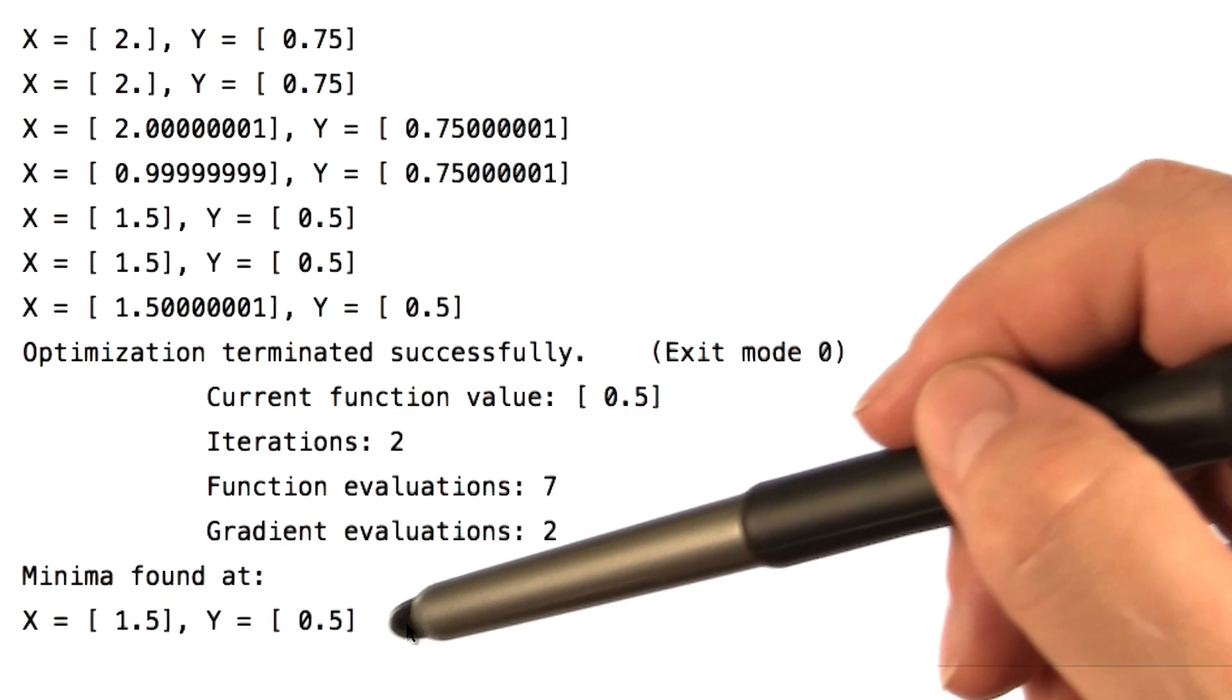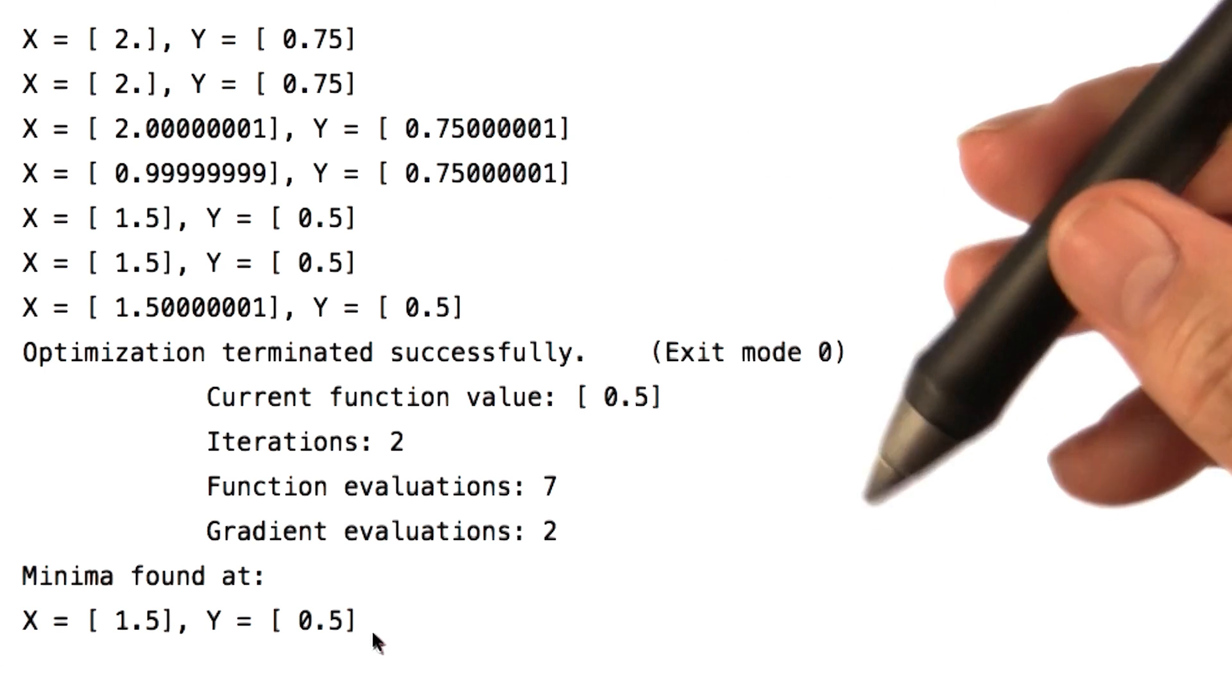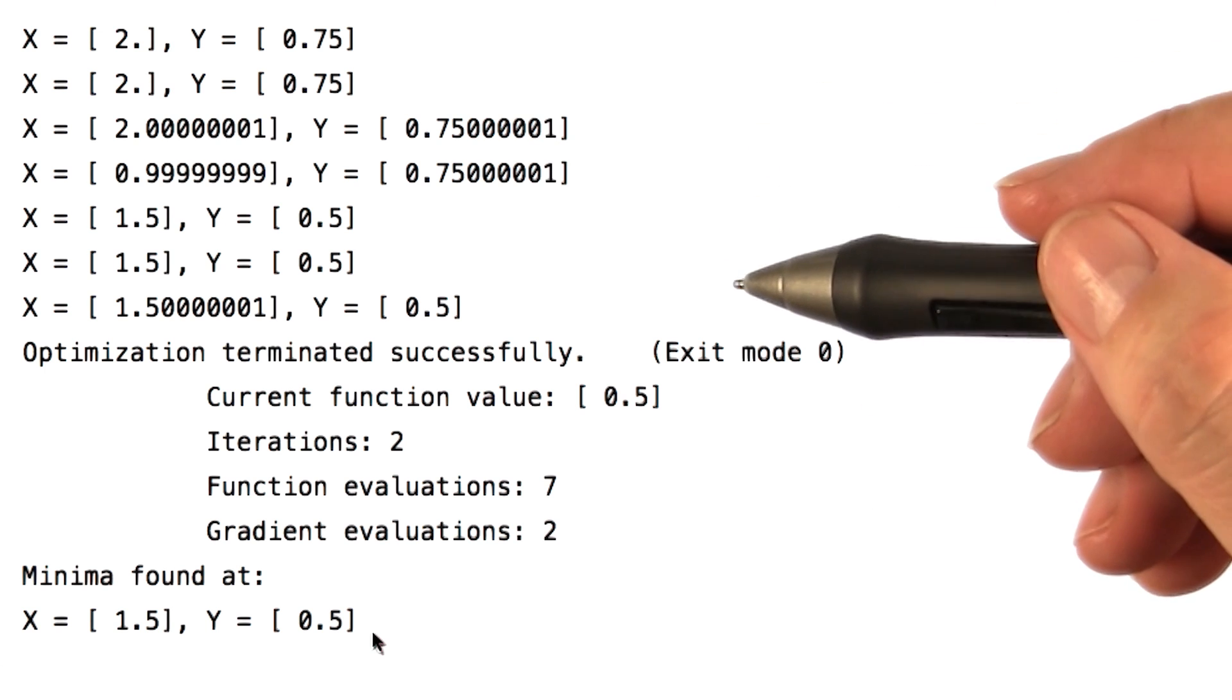Finds the minima at 1.5 with a value of 0.5 there. So, pretty efficient and effective discovery of the minimization.